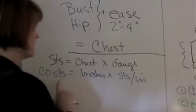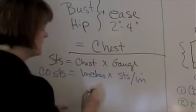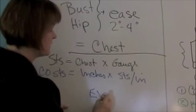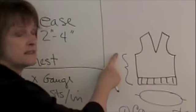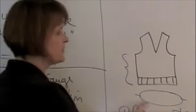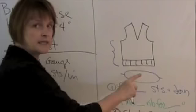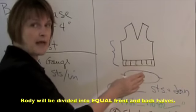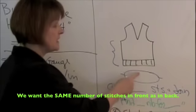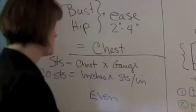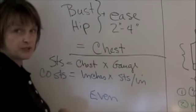Now we want our number of cast on stitches to be an even number. In other words, divisible by two. That's because when we knit to the top of the sweater body, we're going to divide this circular body into even front and back sections. So we want an even number of stitches in the front and back. So we need our original cast on to be divisible by two.